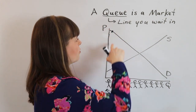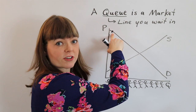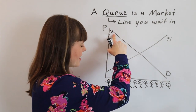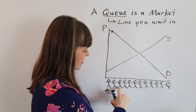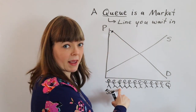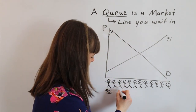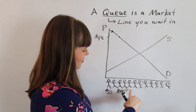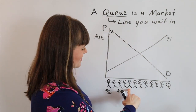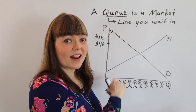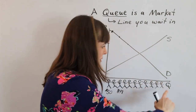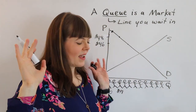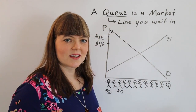This person would pay $50, this person would pay $49, this person would pay $48, $47, $46. And that's how you get your demand curve — that's just how it works.